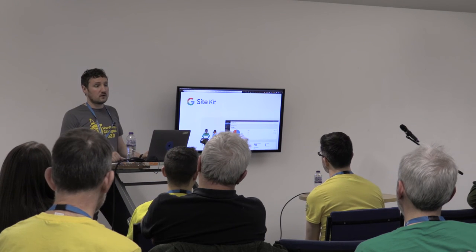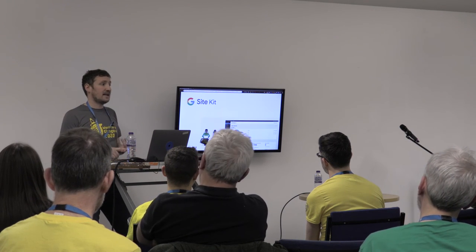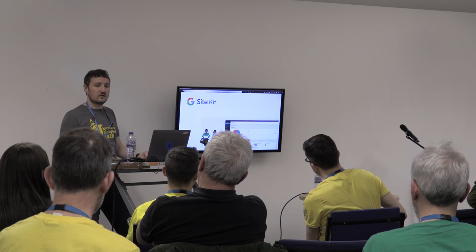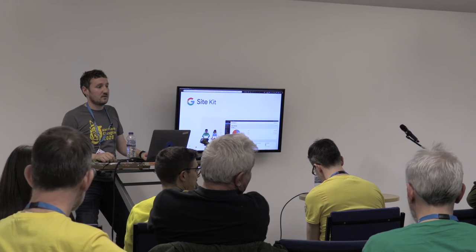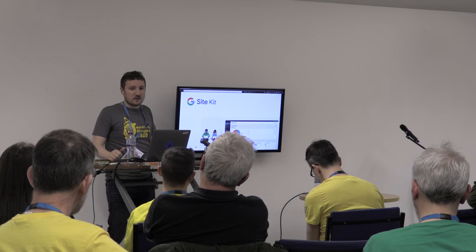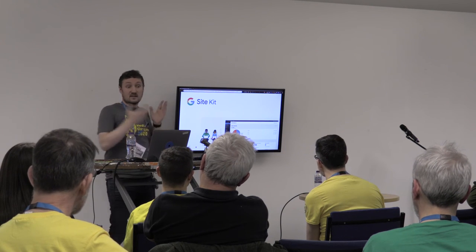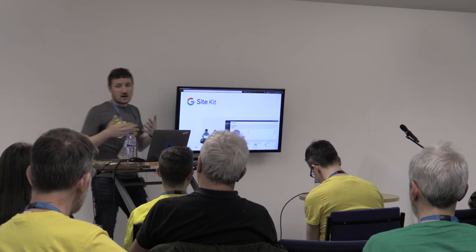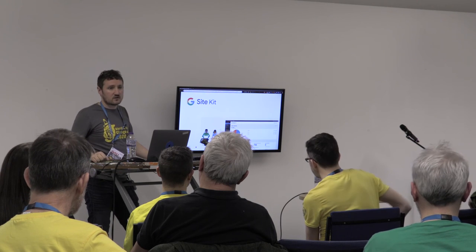SiteKit is another plugin we've worked hard on, released late last year. It integrates lots of different Google products — Search Console, Analytics, AdSense, PageSpeed Insights, Tag Manager, and Optimize — all into one WordPress plugin. You don't need to go to Search Console to submit your website or to Analytics separately. Even AdSense can submit your website for inclusion on the AdSense network. Within the same dashboard you can see visitors over the last seven days, areas of improvement, and check your page speed. It's a really cool plugin — feel free to give it a try.